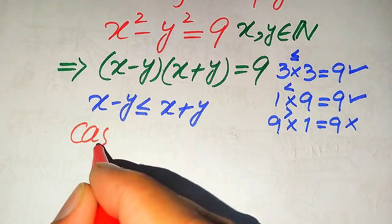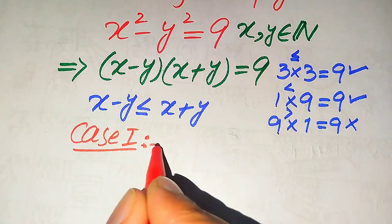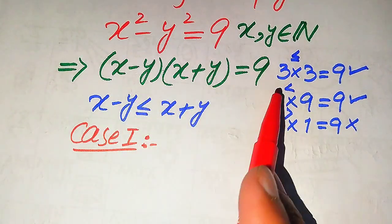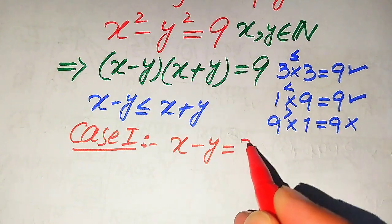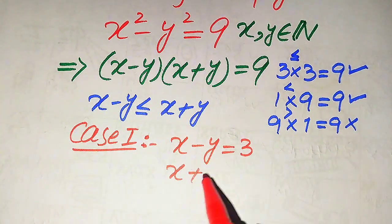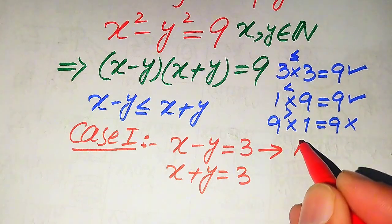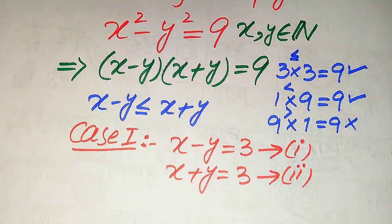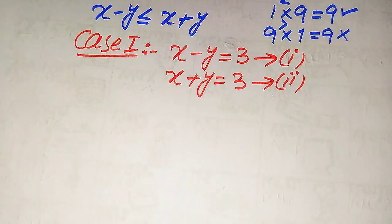We now convert our given equation into these two cases to find the values of x and y. In the first case, comparing the two factors with (3,3), we get: x minus y = 3 as equation 1, and x plus y = 3 as equation 2. We solve these two equations simultaneously.